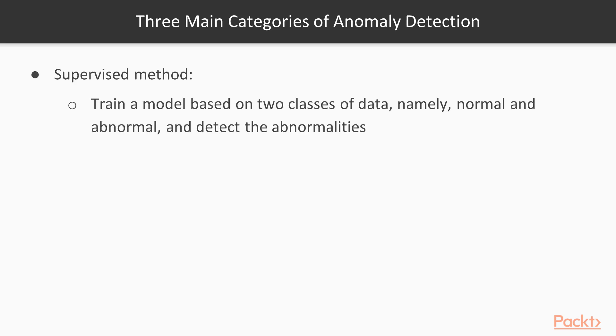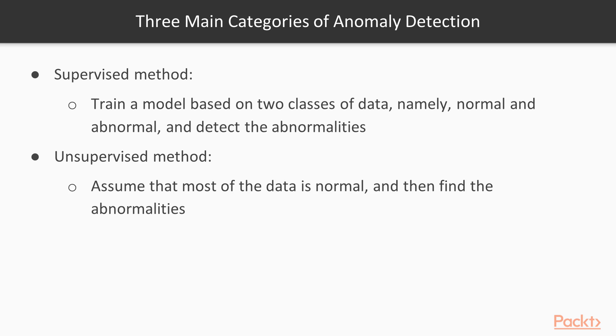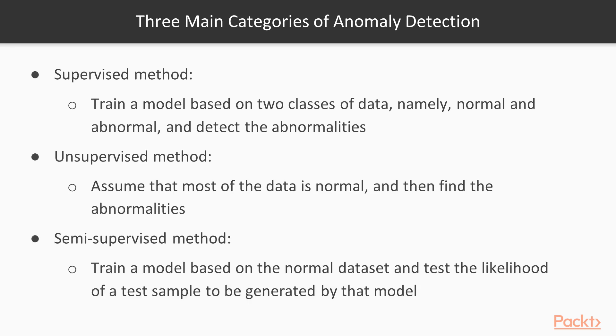There are mainly three categories of anomaly detection methods. The first one is supervised anomaly detection, in which we train a model based on two classes of data, normal and abnormal data, and try to detect their abnormalities. The second group is called unsupervised anomaly detection, which we will focus on in this section. In this method, we assume that most of the data is normal, then we try to find abnormalities. The third group is called semi-supervised anomaly detection, in which we train a model based on the normal data set and test the likelihood of a test sample to be generated by that model.